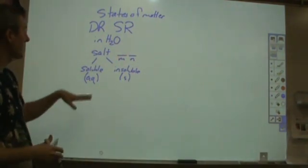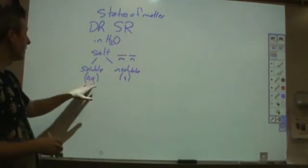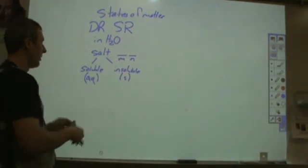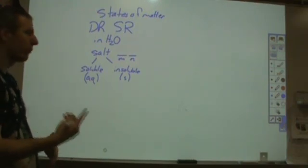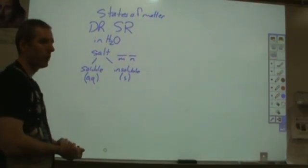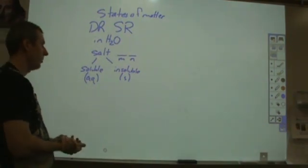So your go-to guess should be aqueous or solid and of those two, aqueous is more common. Most of our salts are soluble in water when we're doing a double replacement reaction. Usually it'll have one precipitate and one soluble product and both of your reactants will be soluble.